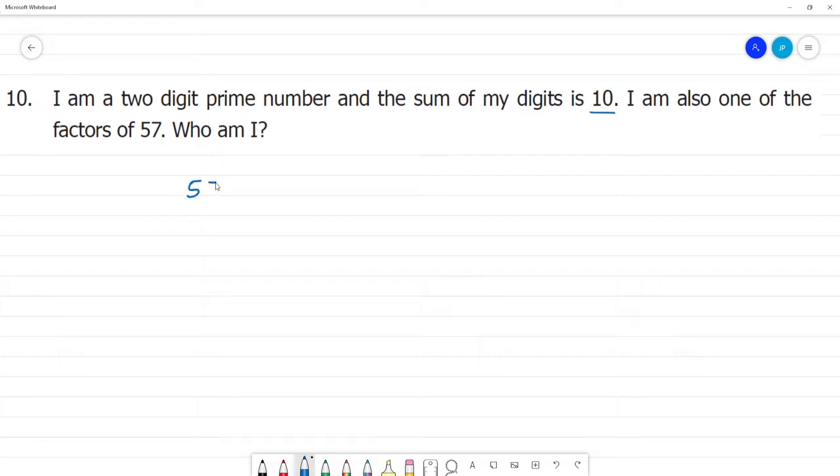57 is the factors number. So 57, 5 plus 7 is 12. 12 is divisible by 3, so 57 is divisible by 3.